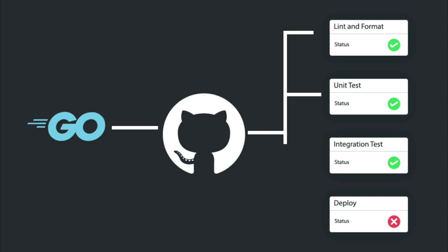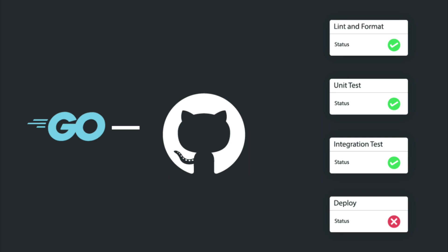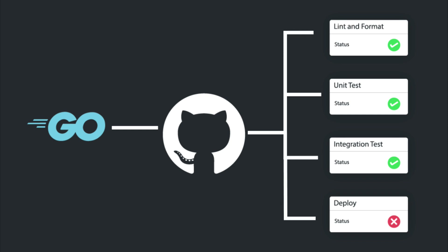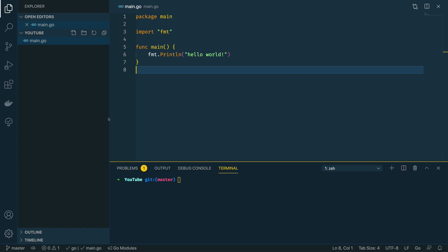For example, whenever I make a change to the main branch of a repository for this website, GitHub Actions automatically runs through a series of jobs that build, deploy, and then test the website to make sure there are no broken links. So with that out of the way, let's dive into Visual Studio Code and start creating some simple GitHub Actions for a Go project.